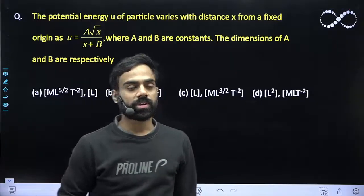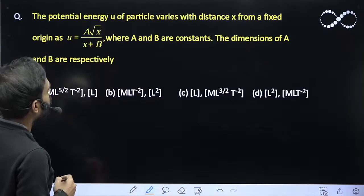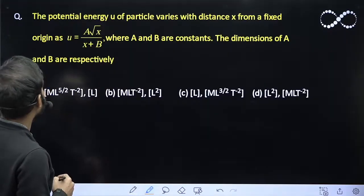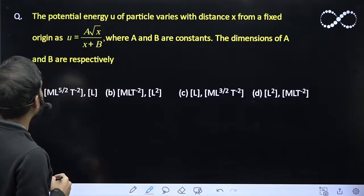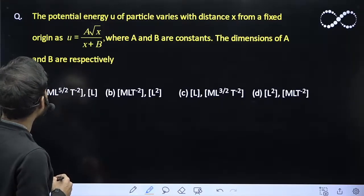Hello students, let us see this question here. The potential energy u of a particle varies with distance x from a fixed origin as u equals A root x divided by x plus B, where A and B are constants. The dimensions of A and B are respectively.